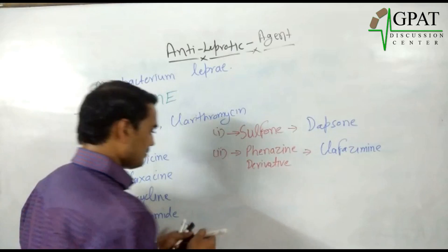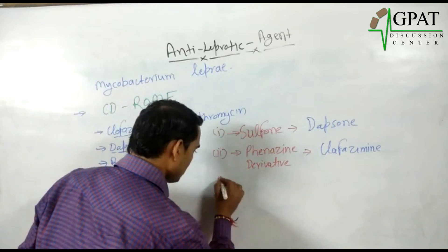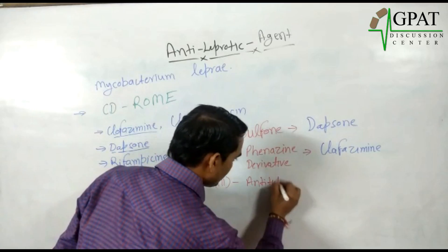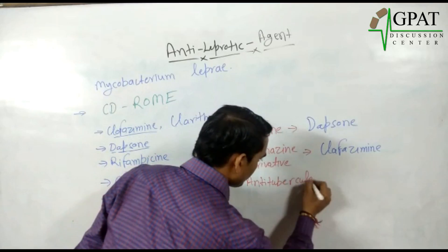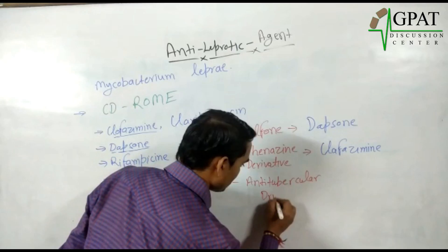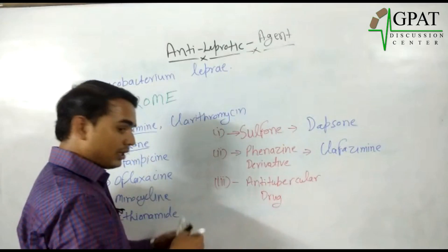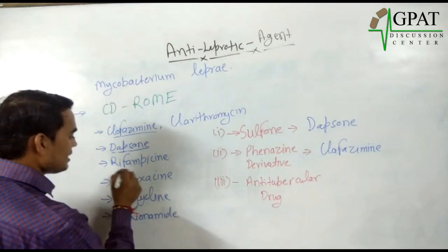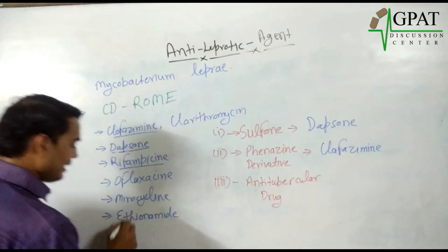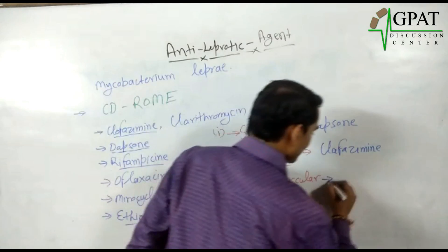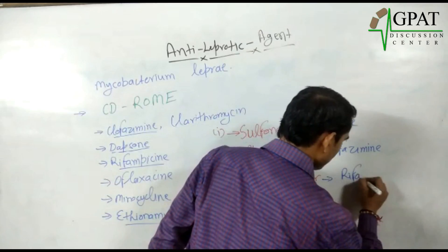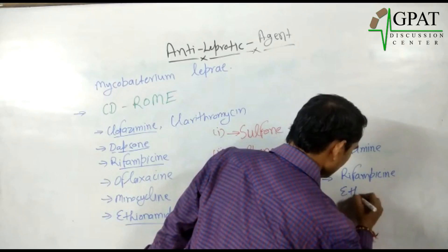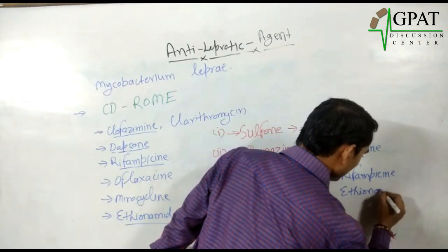Class three is anti-tubercular drugs. Here we have two anti-tubercular drugs: firstly Rifampicin, and second, Ethionamide. So Rifampicin and Ethionamide fall under this class.